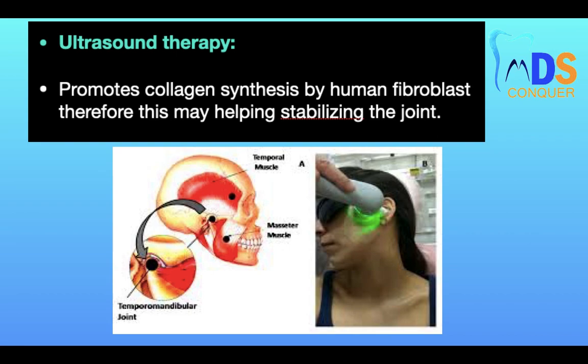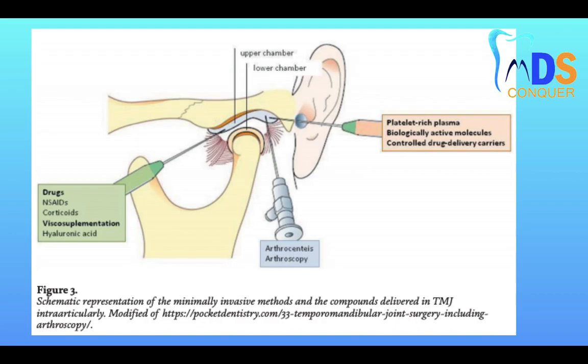Ultrasound therapy is another method by which we can promote collagen synthesis by human fibroblasts, which may help in stabilizing the joint. Intra-articular injections of platelet-rich plasma, biologically active molecules, or drugs like corticosteroids can induce fibrosis inside the joint.